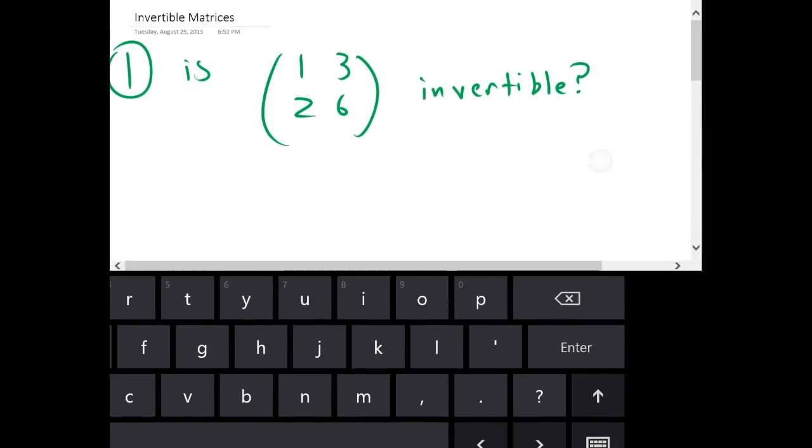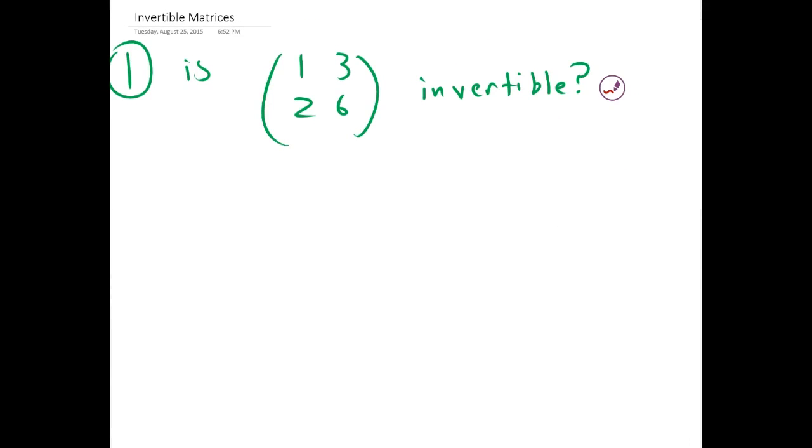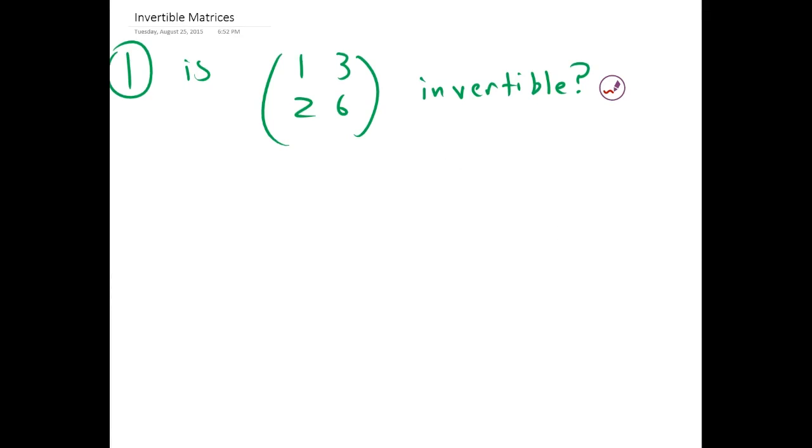I can do some examples for invertible matrices. So first example is asking if this matrix right here is invertible and there's two ways we can do this. First way involves the determinant.